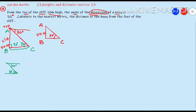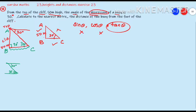In triangle ABC, the angle at C is 30 degrees, the height AB is 50 meters, and we need to find BC. We have three basic trig ratios — sine, cos, and tan. We don't need the hypotenuse here. The angle is 30 degrees, AB is the opposite side, and BC is the adjacent side, so we choose tan theta.